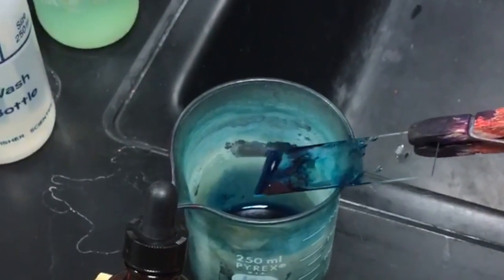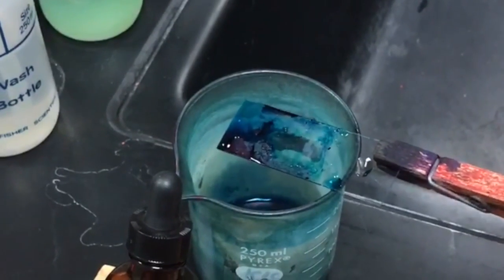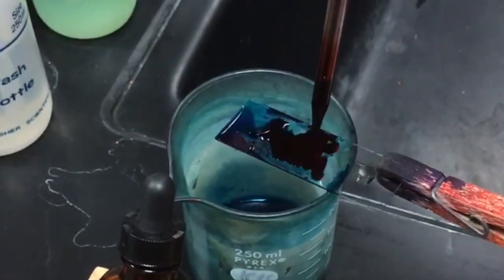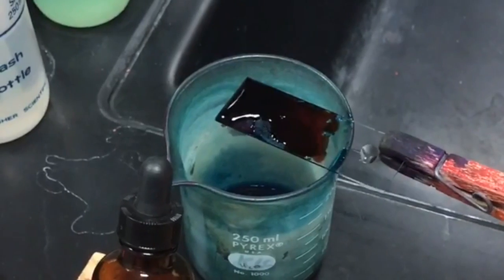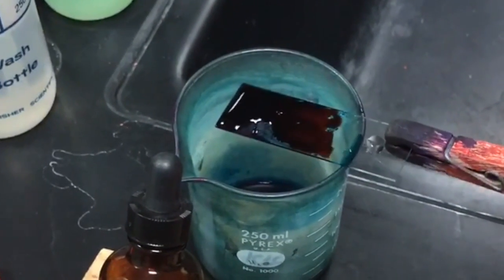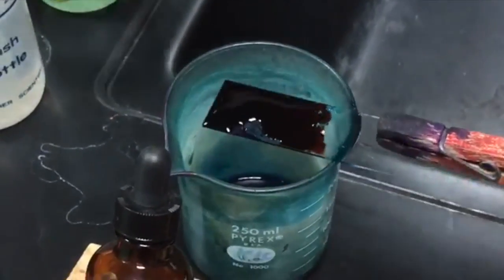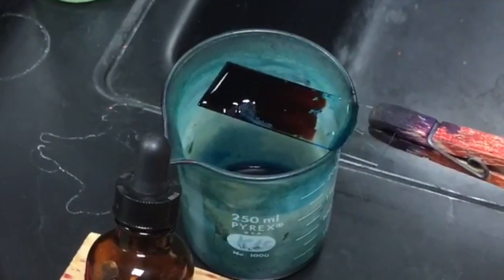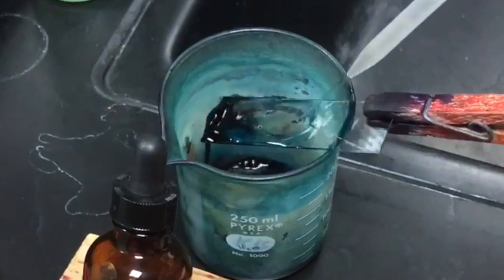Then you're going to use safranin to counter-stain the malachite green. Just let it sit there for about 30 seconds. Once your 30 seconds is up, you're going to use DI water again to rinse the slide in the waterfall. You're going to use the bibulous paper to blot it.